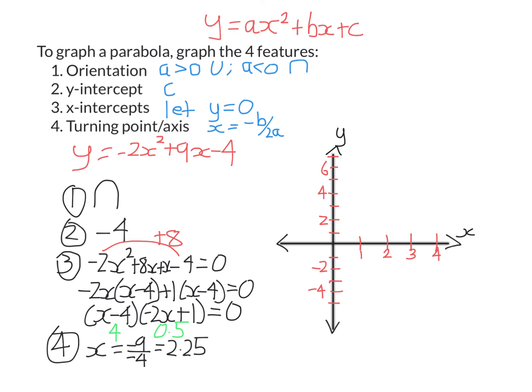To find the turning point I need both an x-value and a y-value. To find the y-value, I substitute x equals 2.25 into the original equation and get y equals 6.125.